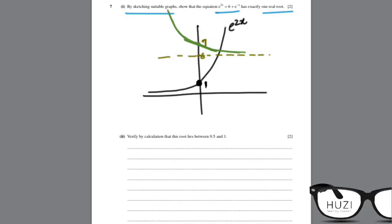And the point of intersection is over here. So, it has exactly one root which is in the first quadrant. So, part 1 is done.